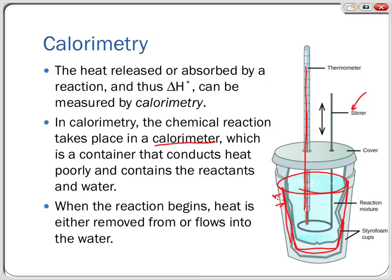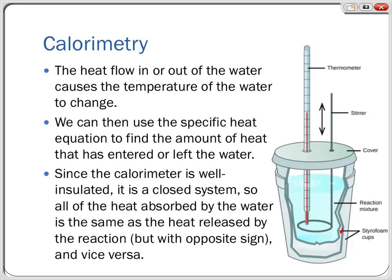The calorimeter is sealed so it's very difficult for heat to enter or leave. When you start the reaction, heat either flows into or out of the water. For an exothermic reaction, ΔH is negative, the reaction loses energy, heat flows into the water, and the water's temperature rises. For an endothermic reaction, heat flows from the water into the chemical system, the water loses energy, and the water's temperature drops.